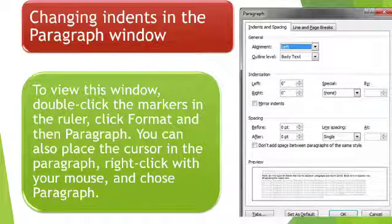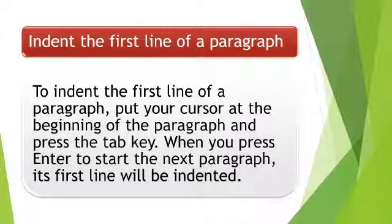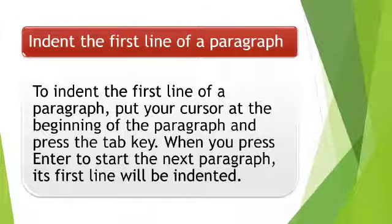In the paragraph dialog box, there are options for indent, spacing, line, and paragraph breaks, and we can change the indent from this window. To indent the first line of a paragraph, put your cursor at the beginning of the paragraph and press the Tab key. When you press Enter to start the next paragraph, its first line will also be indented.